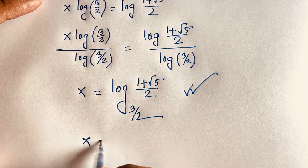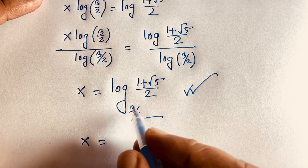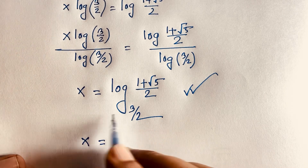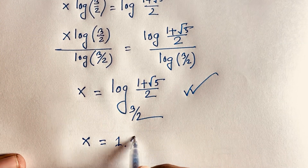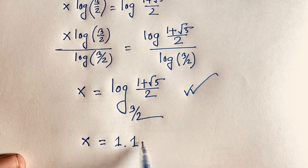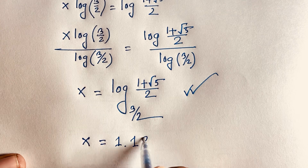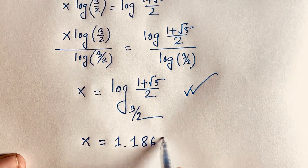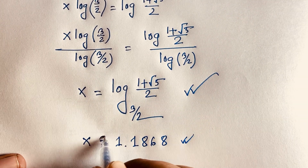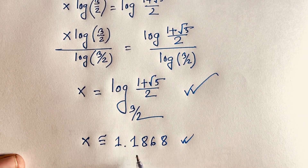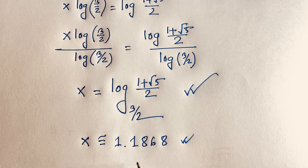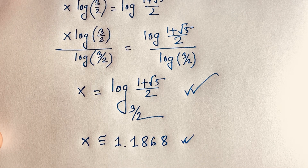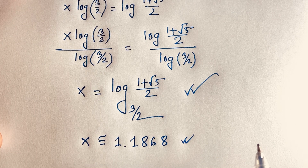Using a calculator, we find x is approximately equal to 1.1868. So x equals 1.1868 is our final numerical answer to this exponential equation.